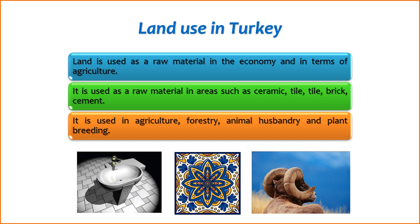2. Agriculture — Cultivation. Agricultural land is used for the cultivation of crops, including cereals, fruits, vegetables, and other food products. Different regions may specialize in specific types of agriculture based on climate and soil conditions. Livestock farming: land is utilized for animal husbandry and livestock farming, providing grazing areas and facilities for raising cattle, sheep, goats, and other livestock.